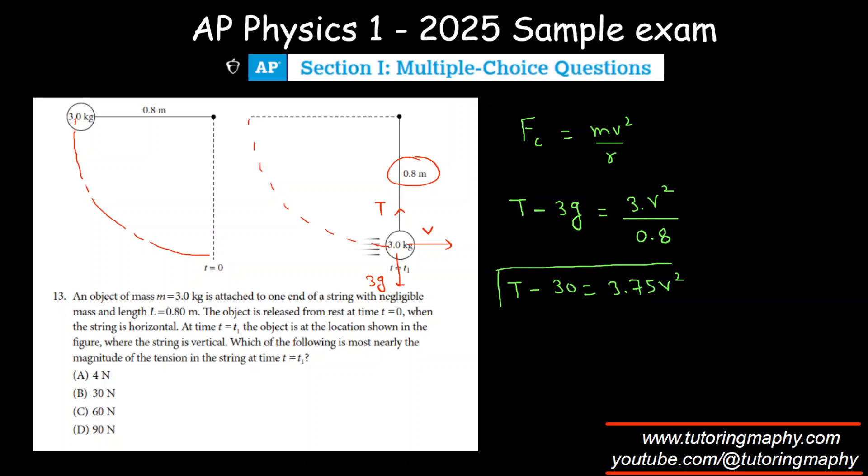Unfortunately I cannot solve for tension unless I have the velocity. We're going to find velocity using energy conservation because the mechanical energy at point A and point B is conserved. They're not talking about air resistance and unless otherwise stated we'll just ignore it.